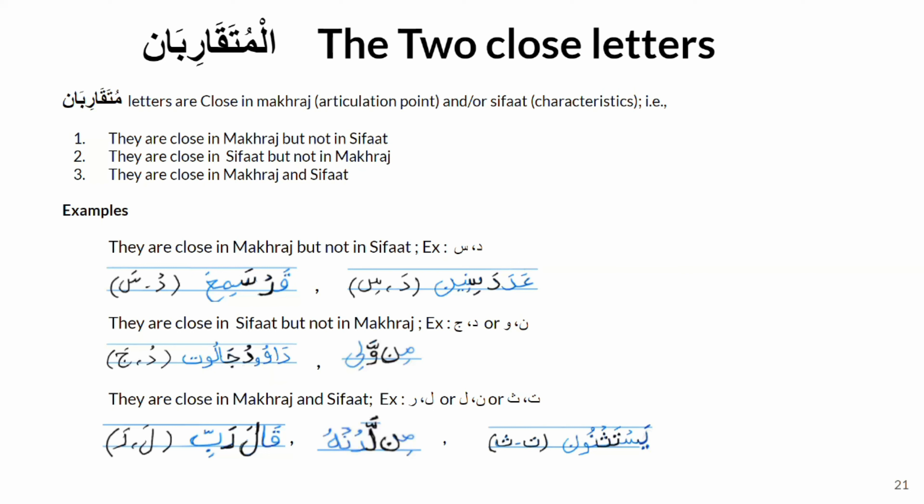Another example of the second way is letter noon and letter waw, as in the word 'mimwali.' Letter noon and letter waw are not close in makhraj — they are not as far apart as, say, ha from the bottom of the throat and mim from the lips, but they are not very close either. However, letter noon and letter waw are close in their sifat, as they only differ in gunna and rakhawa.